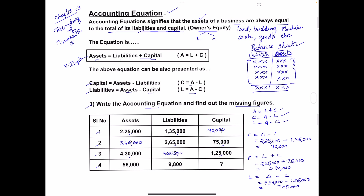In the last example, assets and liabilities are given and we have to calculate the capital. We take the second formula: C = A − L. Assets are 56,000 minus liabilities of 9,800, giving a capital amount of 46,200.